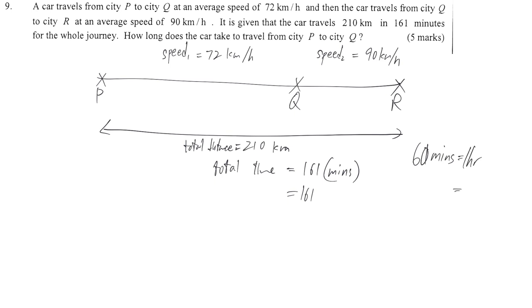Which means that 1 minute only is, we divide both sides by 60, so this is 1 over 60 hours. We replace minutes by 1 over 60 hours. It's how you can transform the unit. So it is 161 over 60 hours.